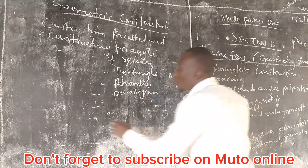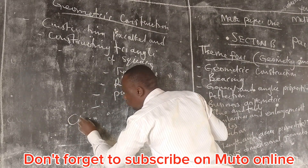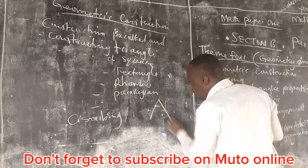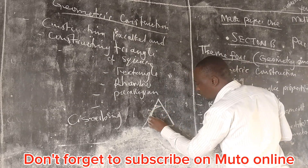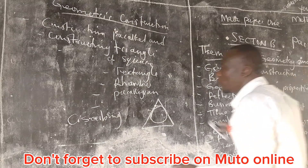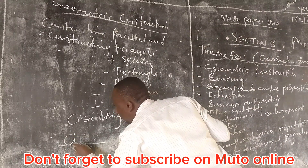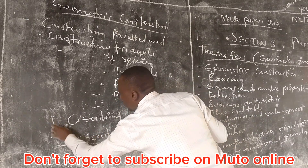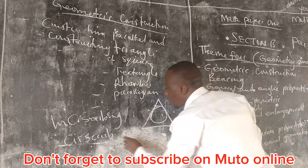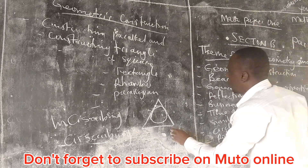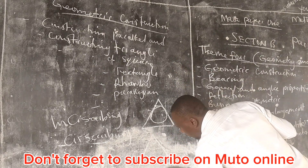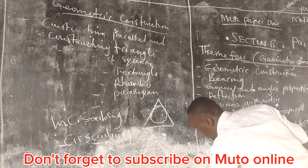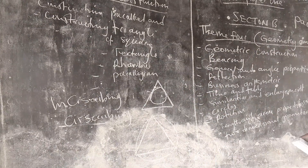Then we shall look at inscribing, where we are going to draw a triangle and the circle is going to pass inside — that is inscribing. Then we have circumscribing, where the circle is going to pass through the edges of the triangle like that, as we are going to look at in detail.